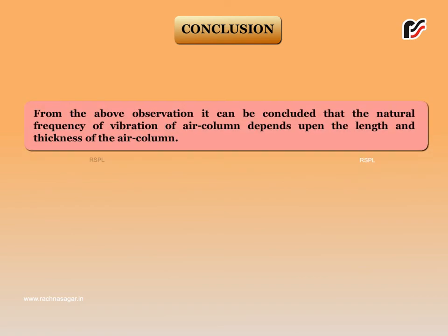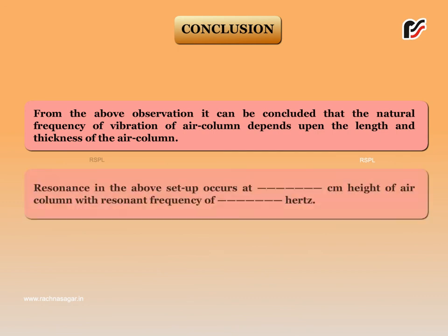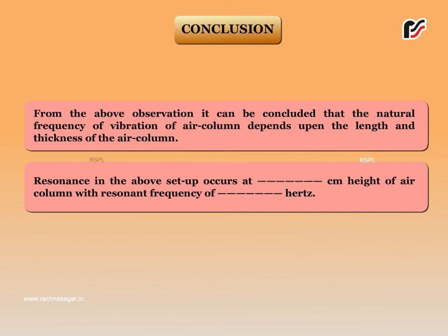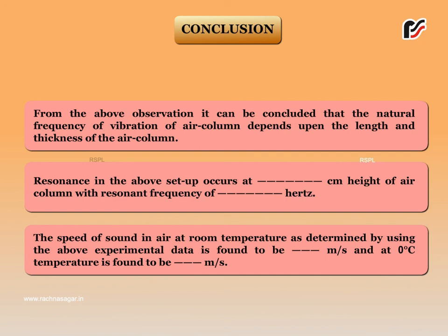Conclusion: The natural frequency of vibration of an air column depends upon the length and thickness of the air column. Resonance in the above setup occurs at a certain centimeter height of air column with a resonant frequency of a certain hertz. The speed of sound in air at room temperature as determined by the experimental data is found to be a certain value in meters per second, and at 0 degrees Celsius is found to be a certain value in meters per second.